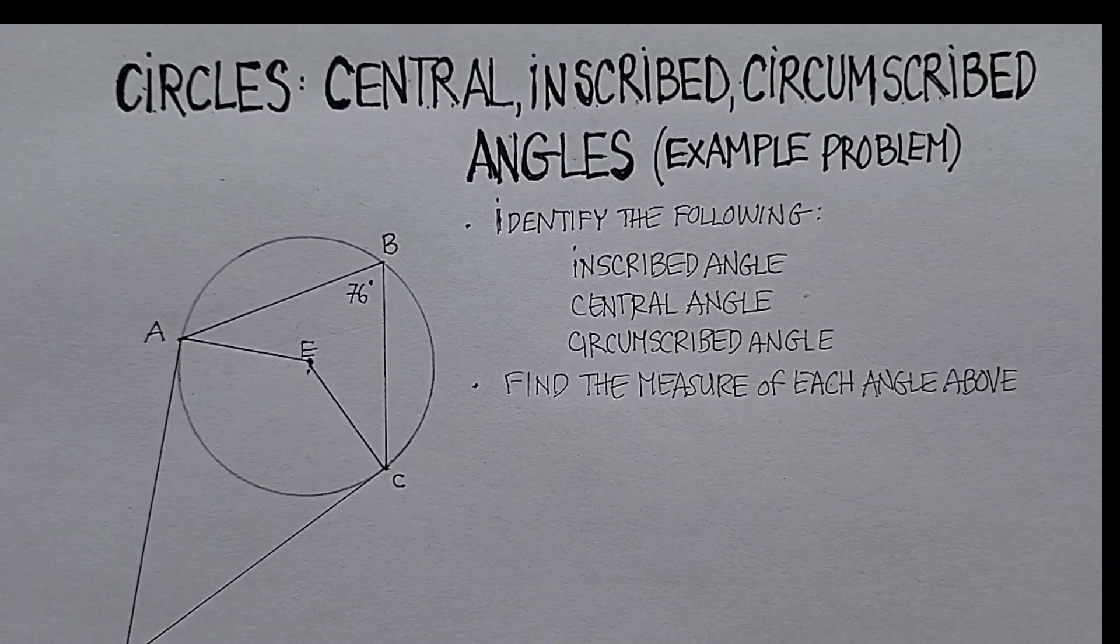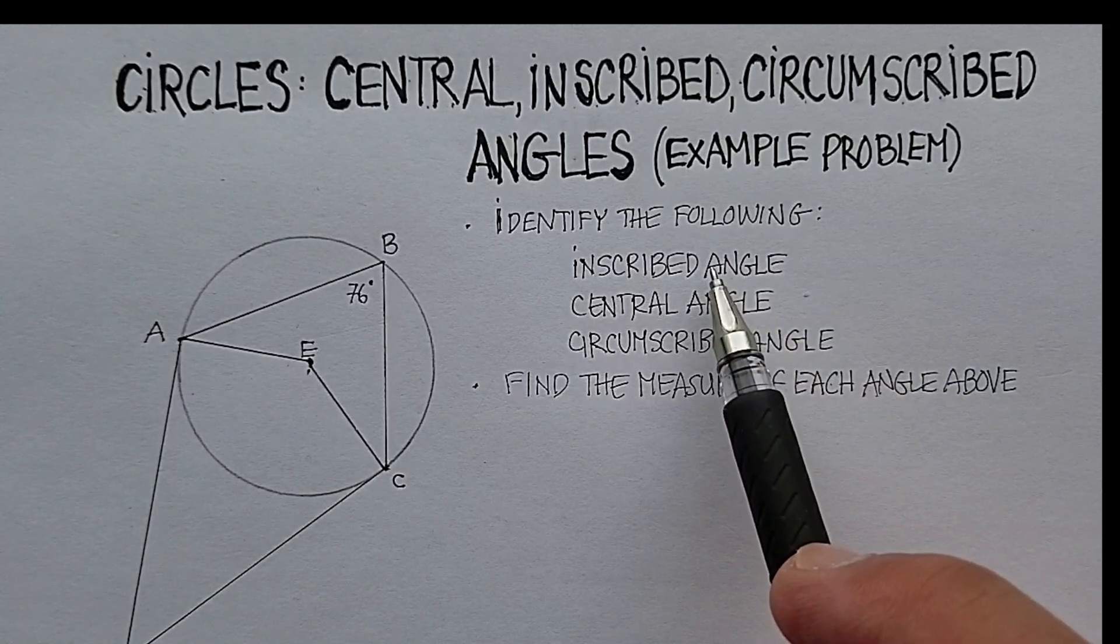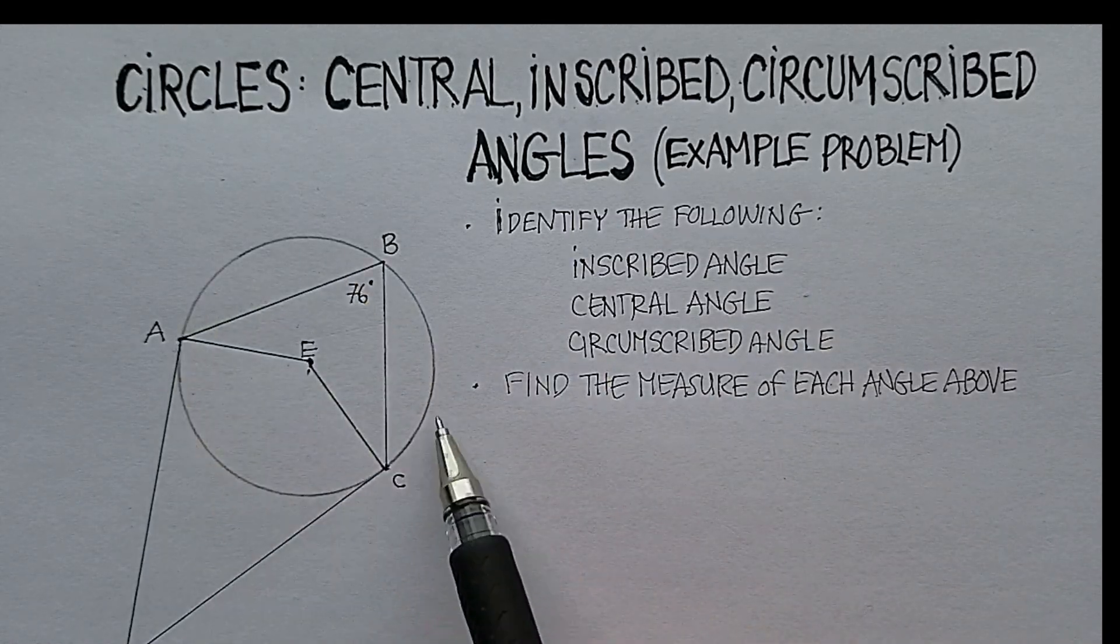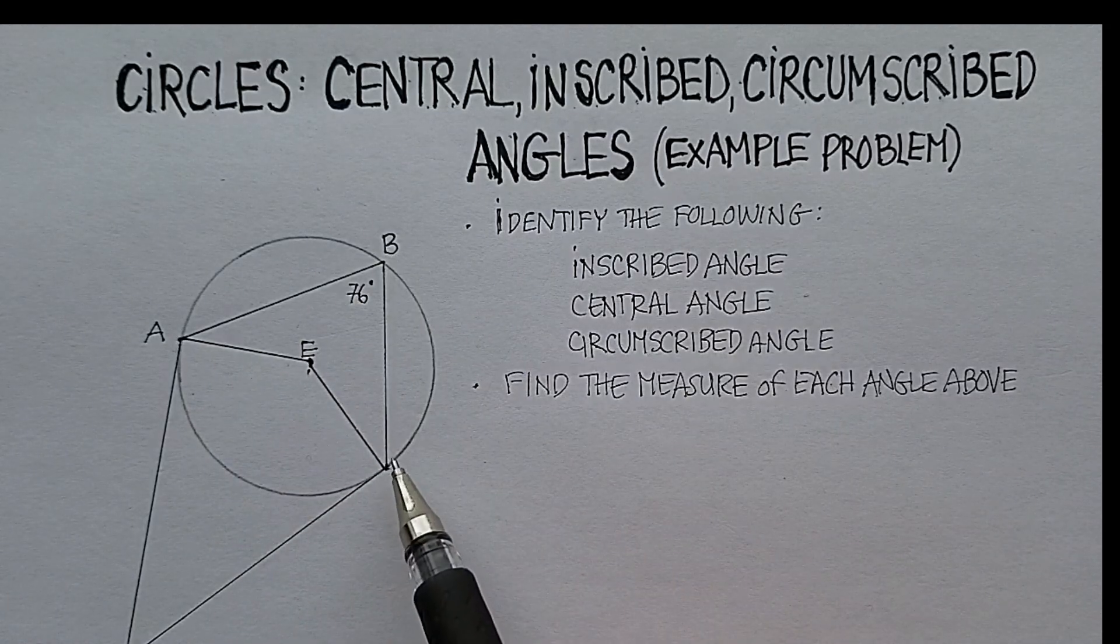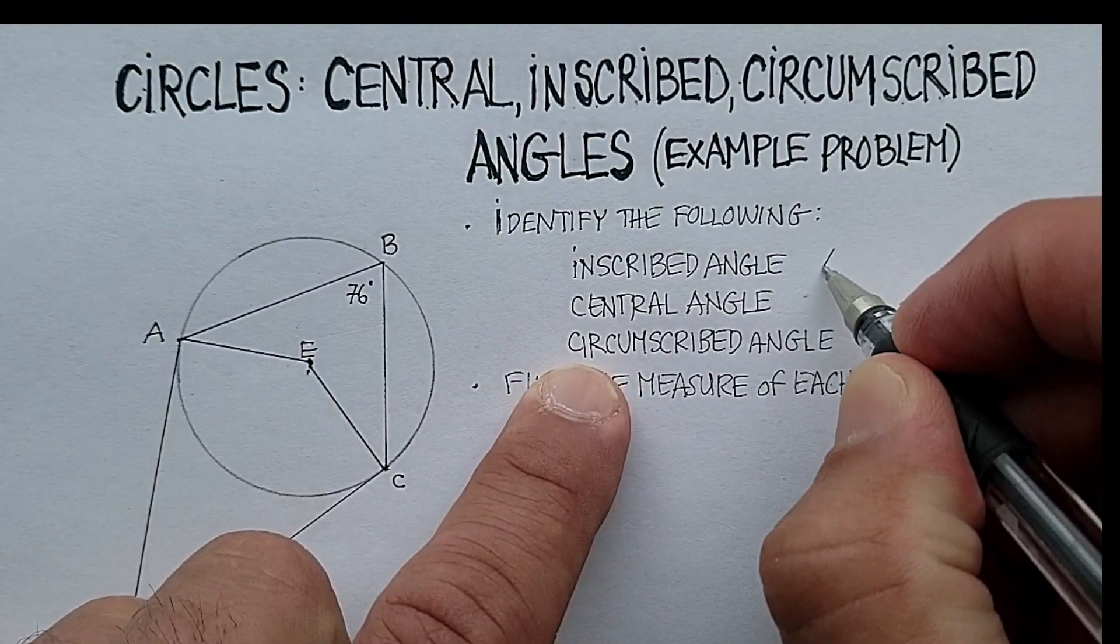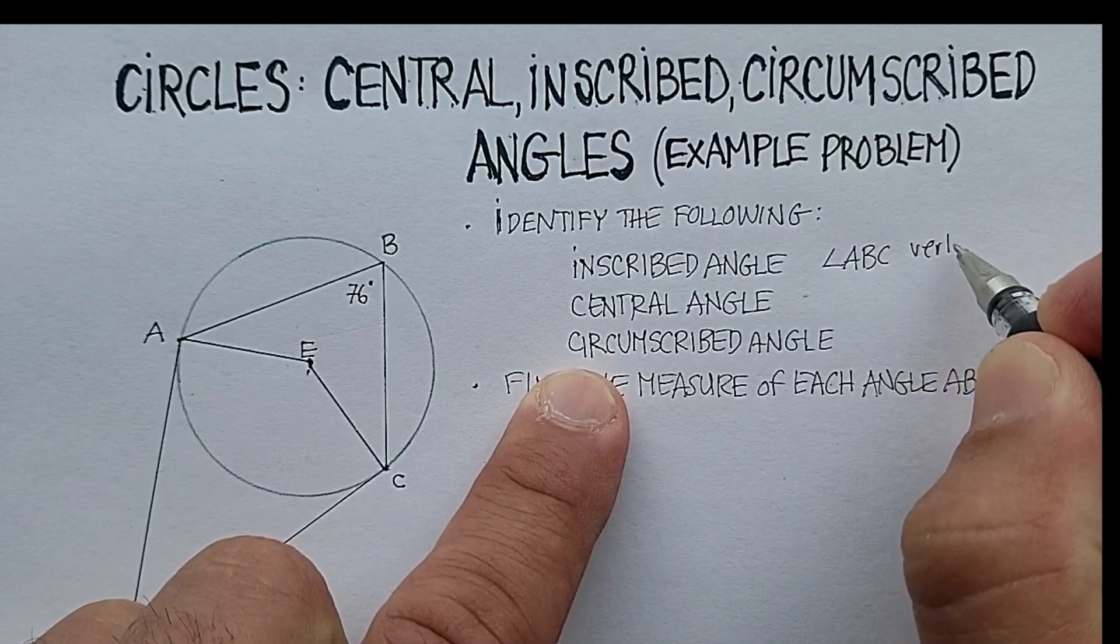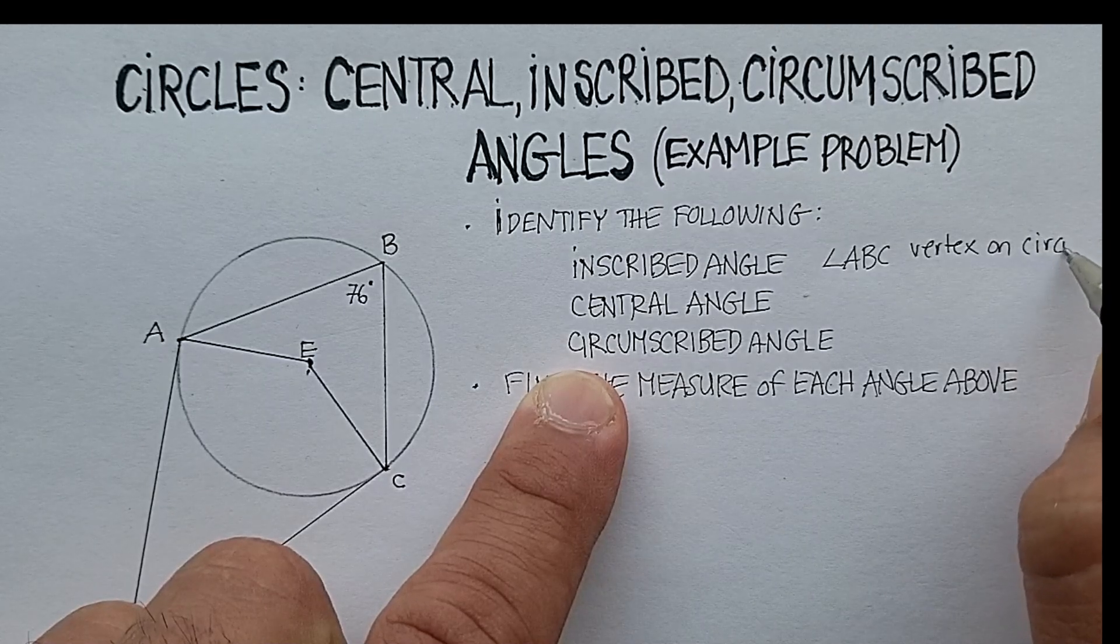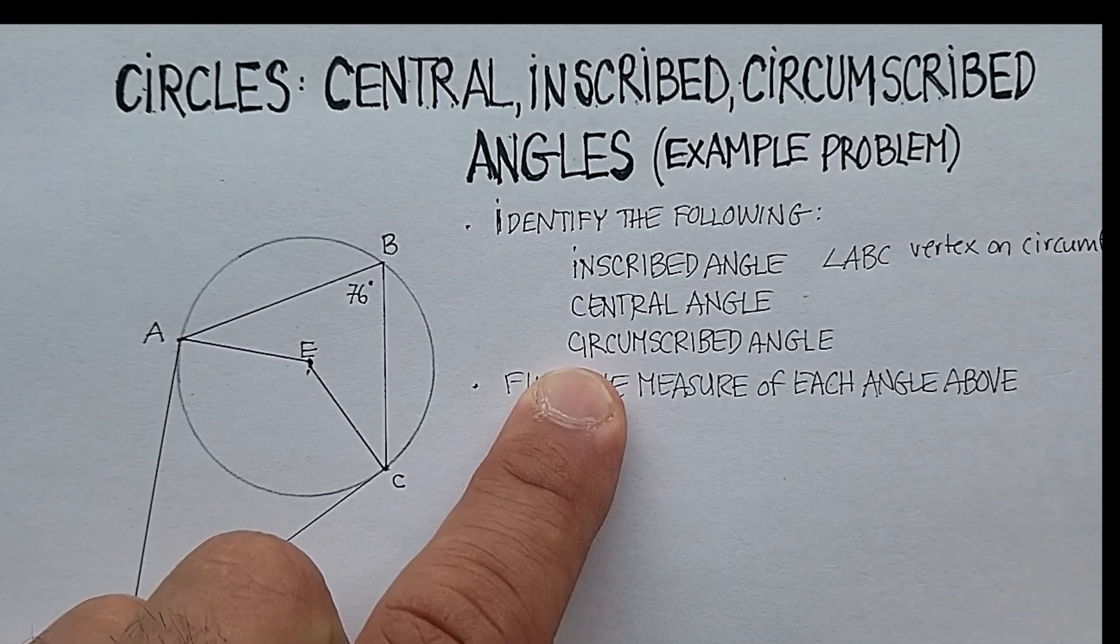Okay, so let's talk about the inscribed angle. Remember that the inscribed angle, the vertex always starts on the circumference of the circle. So in this case, angle ABC is the inscribed angle. So I'm going to identify that as angle ABC, vertex on circumference. Okay, so remember that. That's an important point.